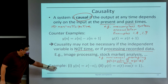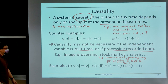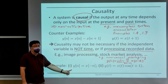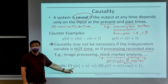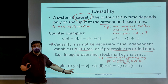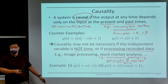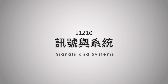Here we have two examples. In this first example, we have y of n equal to x of minus n. Is this signal causal or non-causal? Show your hands if you think this is causal. Show your hands if you think it's non-causal. So why do you think it's non-causal?